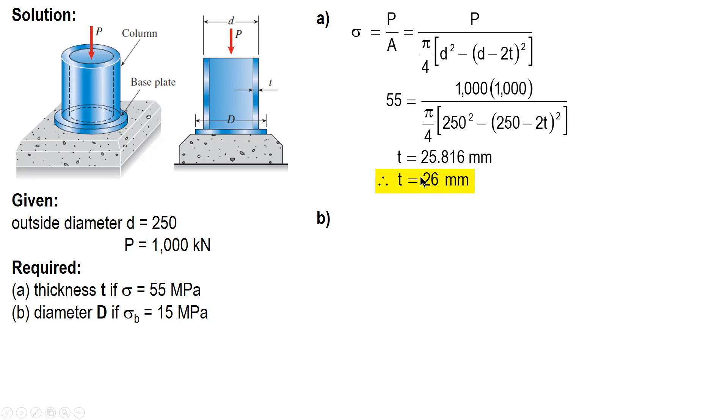Now for letter B, using this value of T, we now compute for the new allowable value of P. Given the same allowable stress and the required thickness or the given thickness, we now compute for the new allowable value of P.